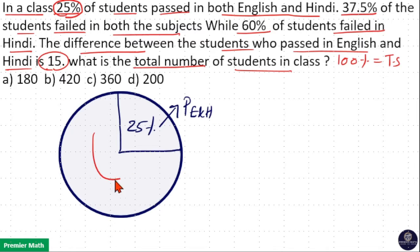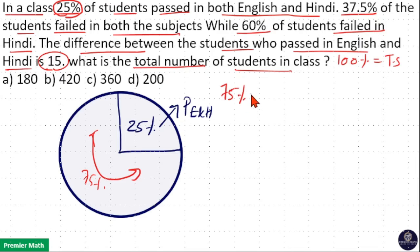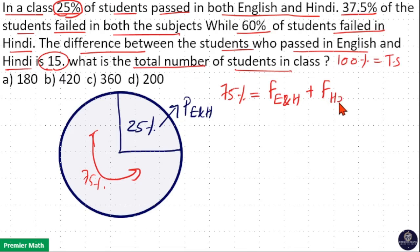The remaining is 75%, which includes all failed students. So 75% includes students who failed in both subjects — that is English and Hindi — plus students who failed in Hindi only, plus students who failed in English only.